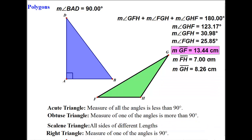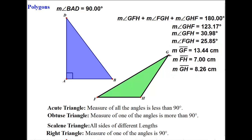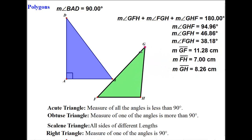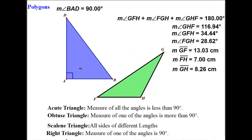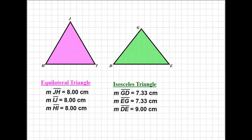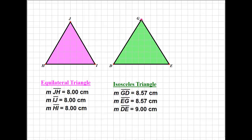If you look at all three sides regardless of the angles, when all three sides are of different lengths, they are called scalene triangles. You can have acute, obtuse, or right triangles that are scalene triangles. Now let's look at some special triangles. An isosceles triangle has two sides of the same length.